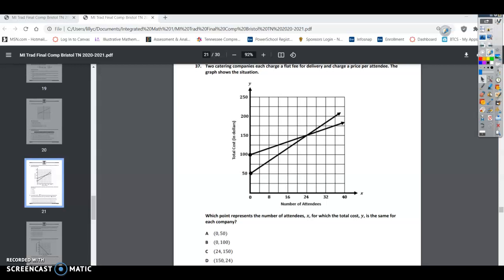So you can see on the left here it says total cost in dollars, and at the bottom it says the number of attendees. Which point represents the number of attendees for which the total cost is the same for each company? Alright, so you're looking for when they equal, so the intersection point is the answer.